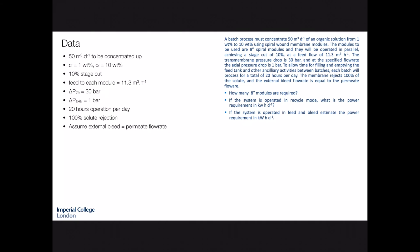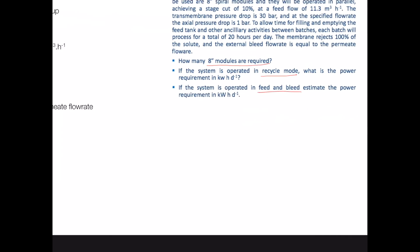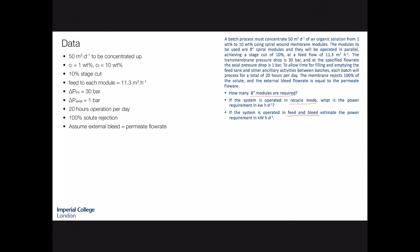The process only operates for 20 hours each day and the membrane rejects 100 percent of the solute. For the feed and bleed mode, the external bleed flow rate is the same as the permeate flow rate. Here is that data summarized as a set of dot points. The questions we are asked to answer are: firstly, how many modules are required; if we operate in recycle mode, what is the power requirement; and operating for 20 hours a day, what is the total energy requirement. Secondly, if we operate in feed and bleed mode, what is the power requirement and the energy requirement over those 20 hours.